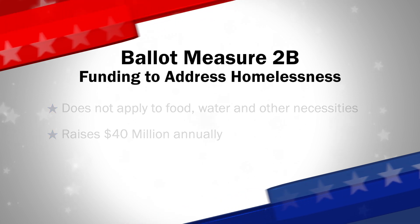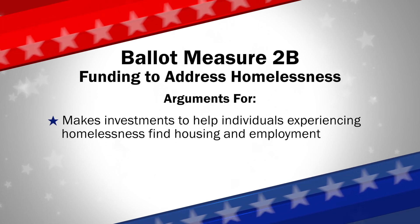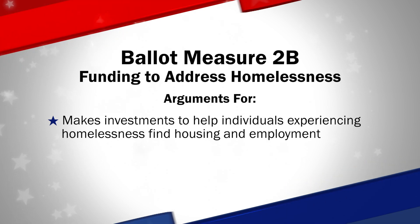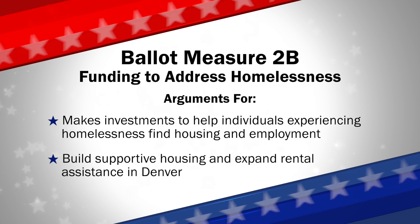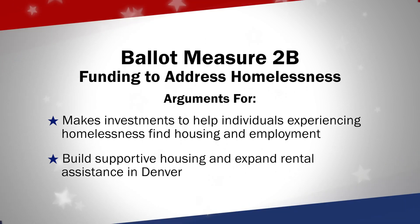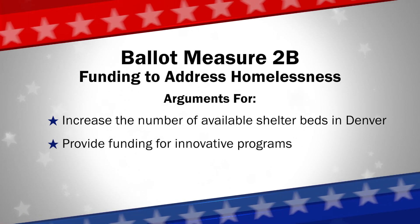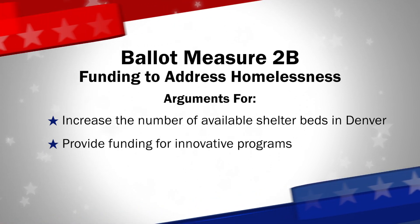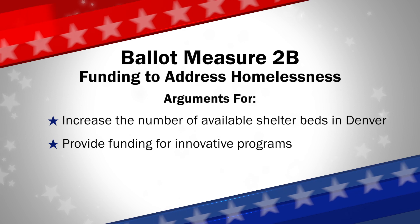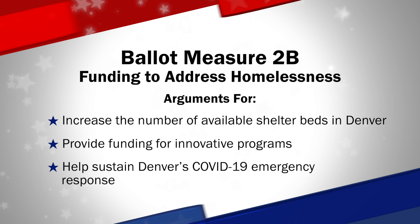Proponents say Ballot Measure 2B will make critical investments to help individuals experiencing homelessness get back on their feet, find housing and employment, and access critical treatment programs. It would build supportive housing and expand rental assistance in Denver, including 1,800 homes over the next 10 years, increase the number of available shelter beds, and provide funding for innovative programs including expanding the use of tiny homes, hiring street outreach workers, and providing medical, mental health, and substance abuse treatment programs. These funds would also help sustain Denver's COVID-19 emergency response.